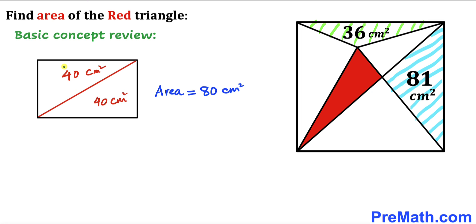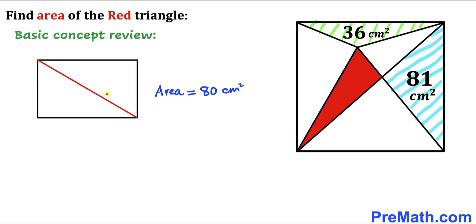In other words, these areas are going to be exactly the same. And if we put the diagonal the other way around, the area is still going to be 40 centimeters square each.